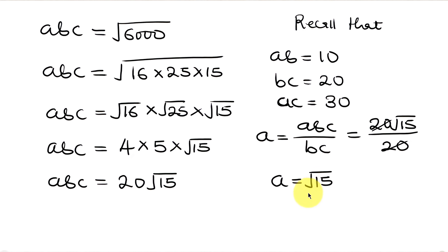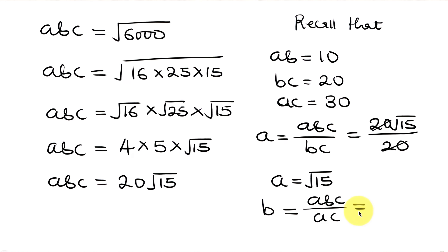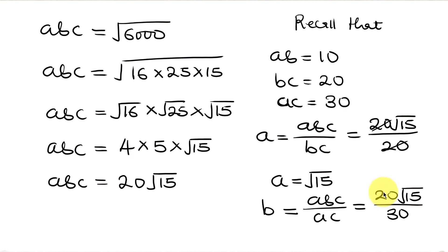To get b: b equals abc divided by ac, since a and c cancel, leaving b. The numerator abc is 20 root 15, divided by ac which is 30. Dividing by a common factor of 10: 20 divided by 10 is 2 and 30 divided by 10 is 3. So b equals 2 root 15 over 3.